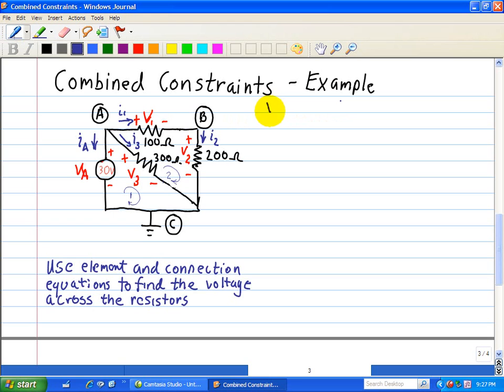So here we have V1 is equal to 100 ohms times the current through it, I1. And the first thing you need to do is to label the currents and the polarities associated with this circuit for each of the elements. So here we have I1 pointed in this direction, therefore our polarities is plus and minus,